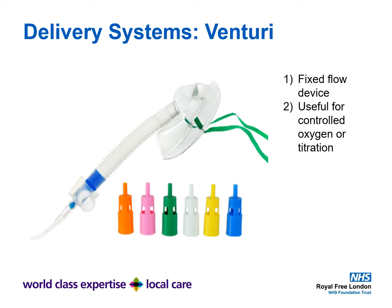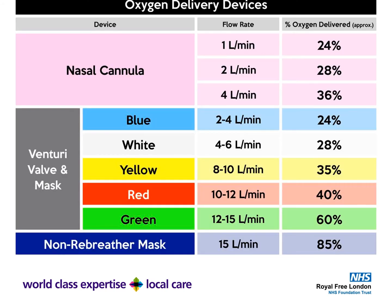The Venturi system uses fixed-flow devices, which are useful for controlled titration of oxygen. It's difficult to equate nasal cannula flow directly to an oxygen percentage, as it depends on whether the patient breathes through their mouth or nose. The Venturi system is more fixed: 2 litres via a blue Venturi valve equals 24% oxygen; white is 4 litres; yellow is 8 litres; red is 10 litres; and green is 12 litres.